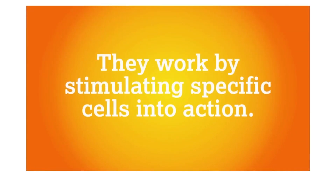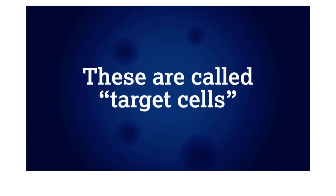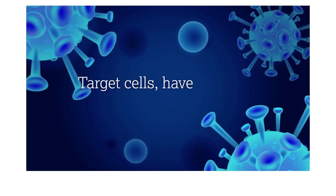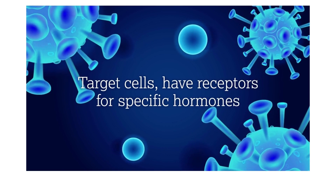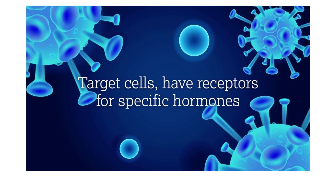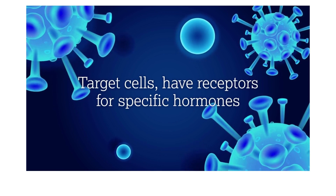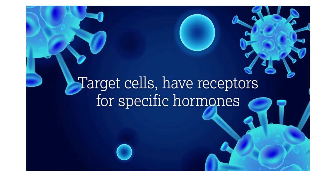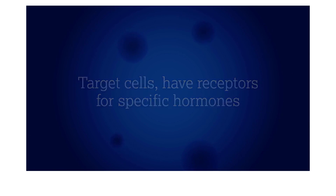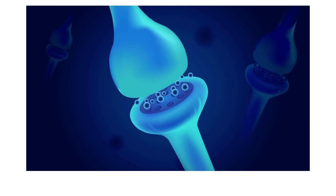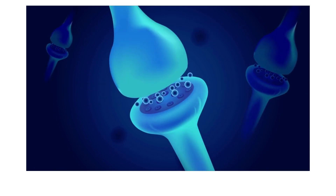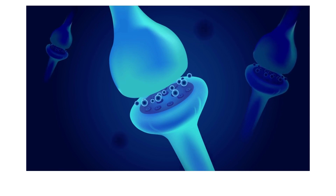They work by stimulating specific cells into action. These are called target cells. Target cells have receptors for specific hormones. These target cells may be within endocrine glands, stimulating further hormone production, or in other parts of the body, triggering other actions. Certain hormones such as cortisol, testosterone, and estrogen are primarily associated with endocrine glands and usually lock onto receptors within a cell, which may delay triggering the required action.